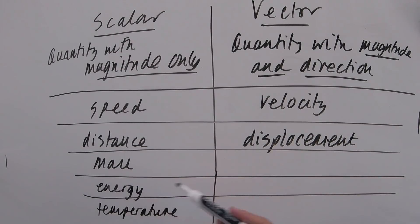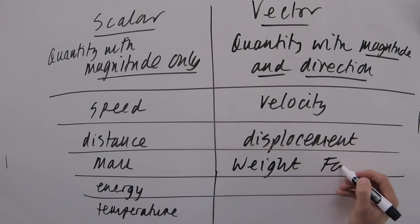When we're looking at mass, then the vector version of this would be weight. Now weight is actually just an example of a force. So all forces are vectors. You need to know that. So force, but one example of a force is weight. So our weight is directed towards the centre of the earth right now.